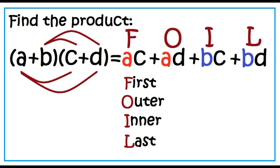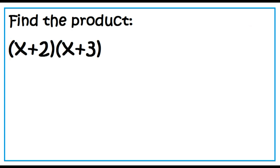FOIL stands for: First terms, Outer terms, Inner terms, Last terms. Find the product of the quantity X plus 2 and X plus 3.